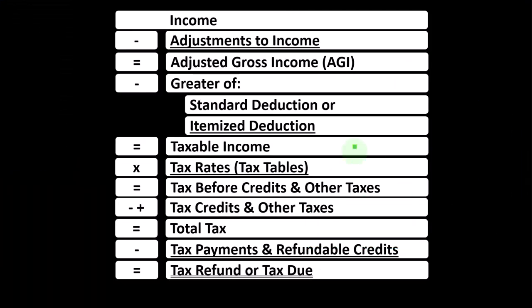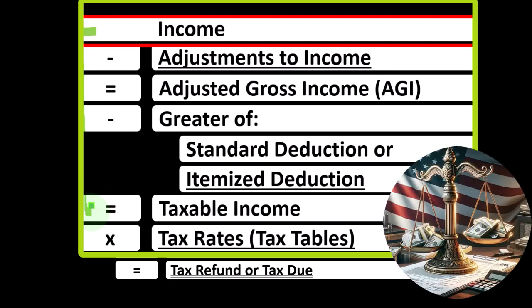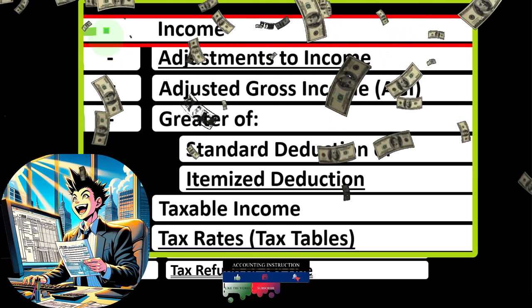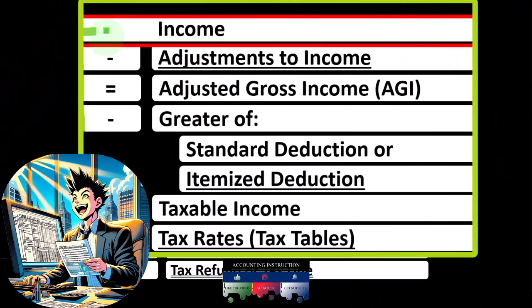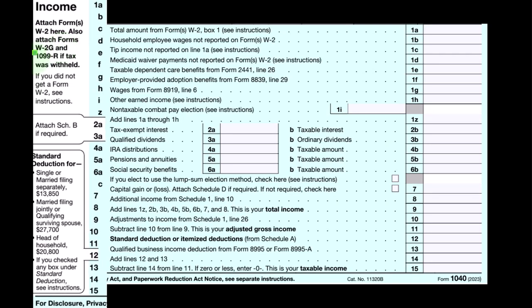Looking at the income tax formula, we're focused on line one income. In the first half of the income tax formula, it's kind of a funny income statement. Most income statements have income minus expenses resulting in net income. Here we have income minus various deductions resulting in taxable income, noting that the income line item is something we would generally like to have as low as possible. We're looking for items that might be excluded from income, and some items might have a more favorable tax rate, such as qualified dividends and possibly long-term capital gains. Here's page one of the Form 1040.